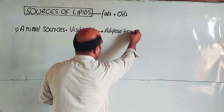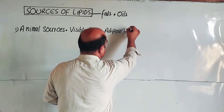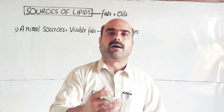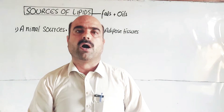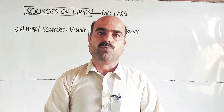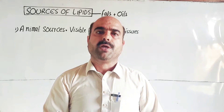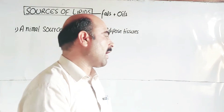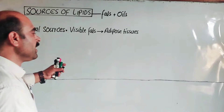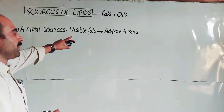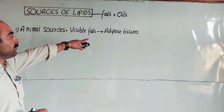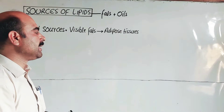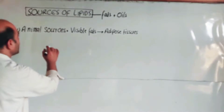We can use the visible parts of adipose tissues from cattle. If you have cattle, sheep, buffalo, cow, goat, or any animal, you can use the parts of adipose tissues as a source of lipids. Animals can also be indirect resources.